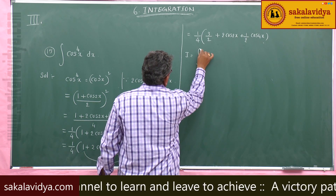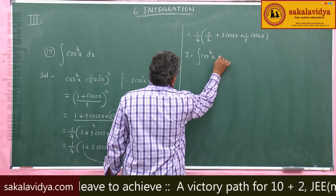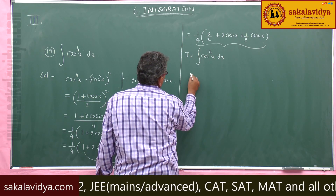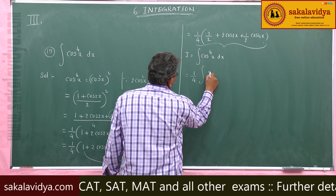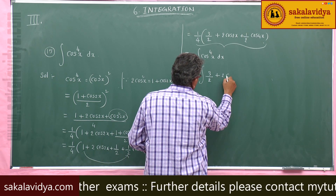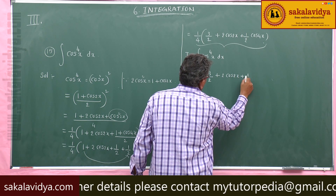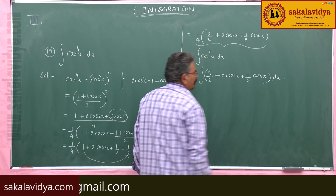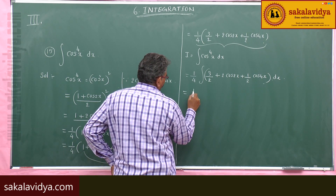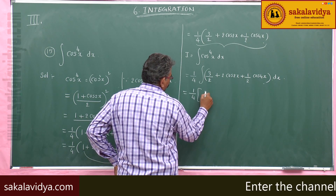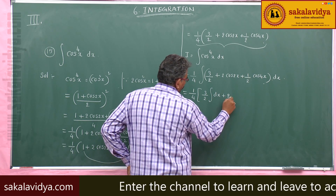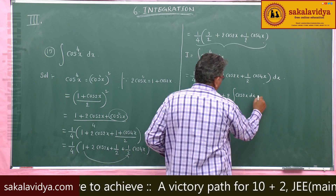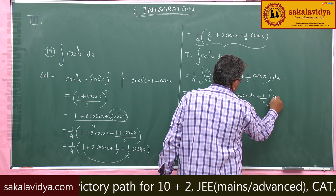So I equals integral of cos⁴x dx, which is replaced by this value. Taking 1/4 outside: 1/4 integral of (3/2 plus 2 cos 2x plus 1/2 cos 4x) dx. We now integrate each term: 1/4 of 3/2 · integral dx plus integral 2 cos 2x dx plus integral 1/2 cos 4x dx.